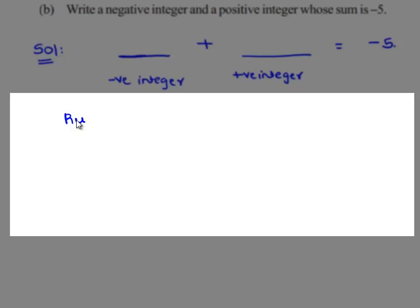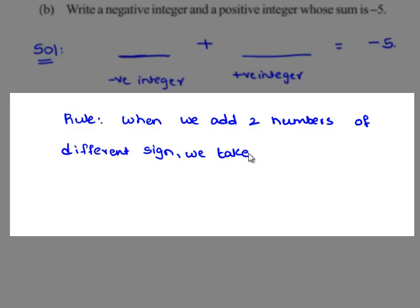Here we state a rule: when we add two numbers of different sign, we take the difference and then give the sign that has the greatest value.